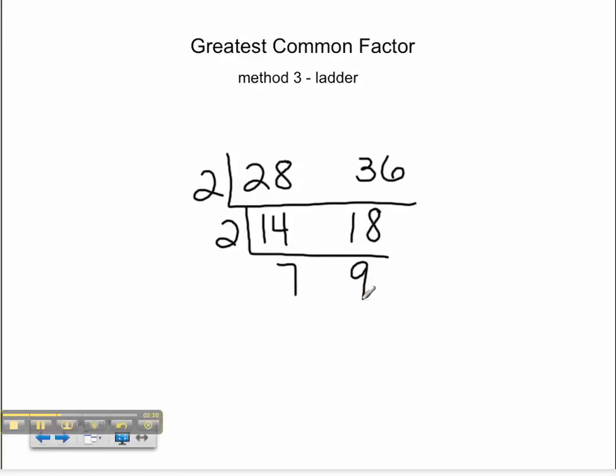We ask ourselves, does 7 and 9 have a common factor? No, they do not. Therefore, we will take the numbers on the outside of the ladder, multiply them together and 2 times 2 is 4.